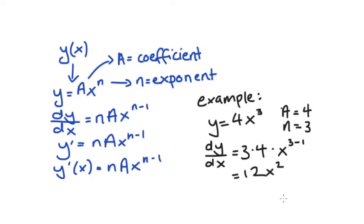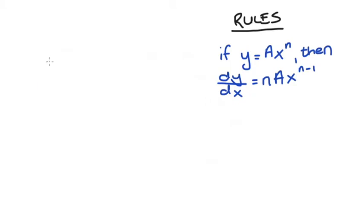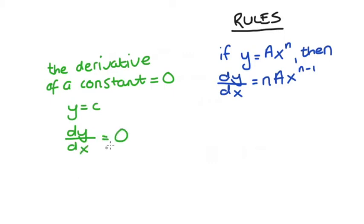So that's the big rule. It might seem a little restrictive, but there are a couple of other rules that are important and will help make this rule applicable to a wider range of functions. The first one is that the derivative of a constant is equal to zero. This is basically because when we take the derivative we think about the slope of a function, and constants have zero slope. So if y is equal to c, where c is some constant, then dy/dx is equal to zero.